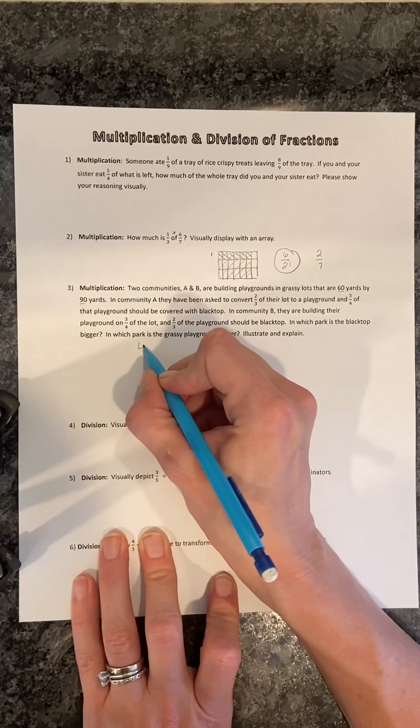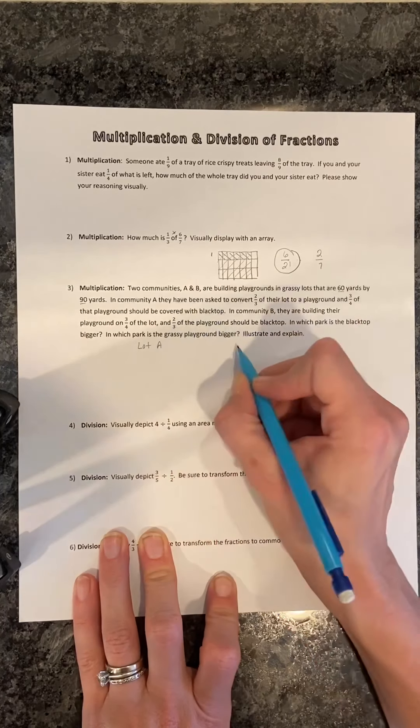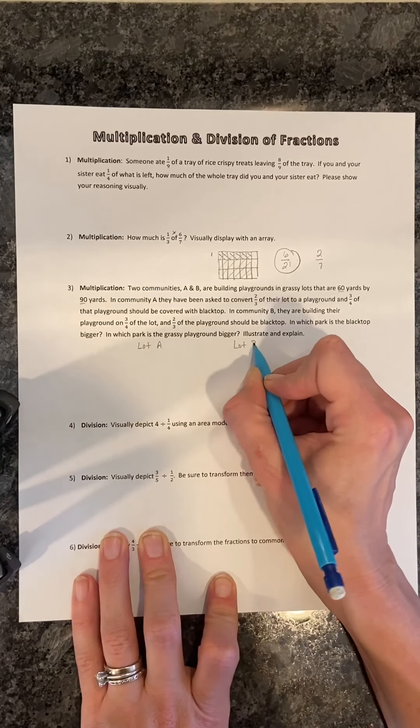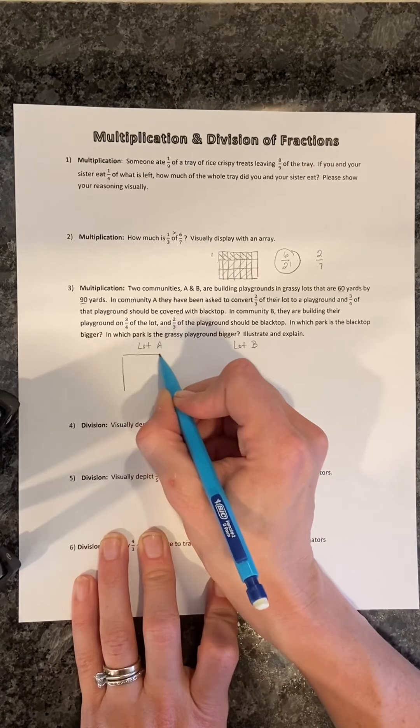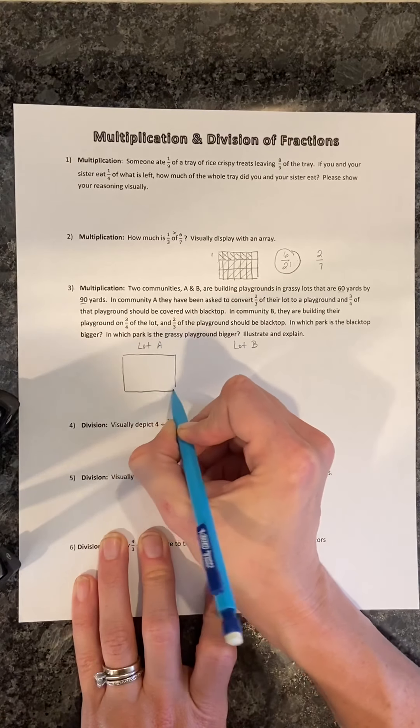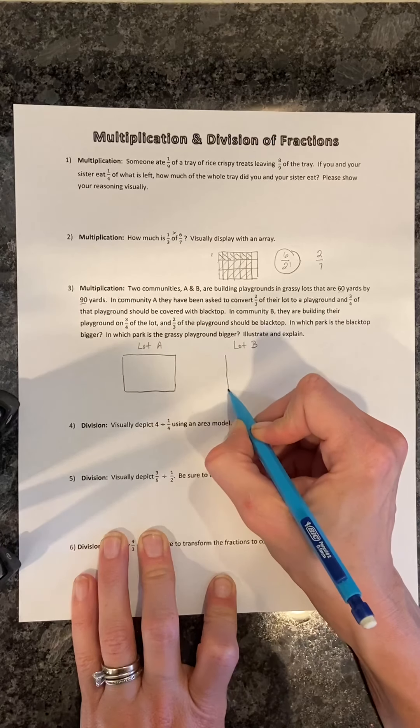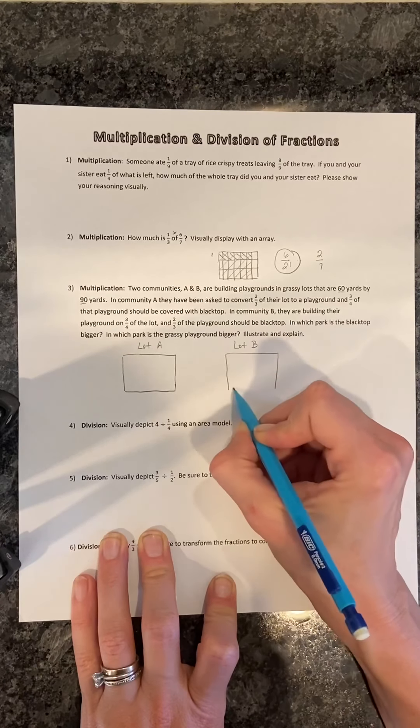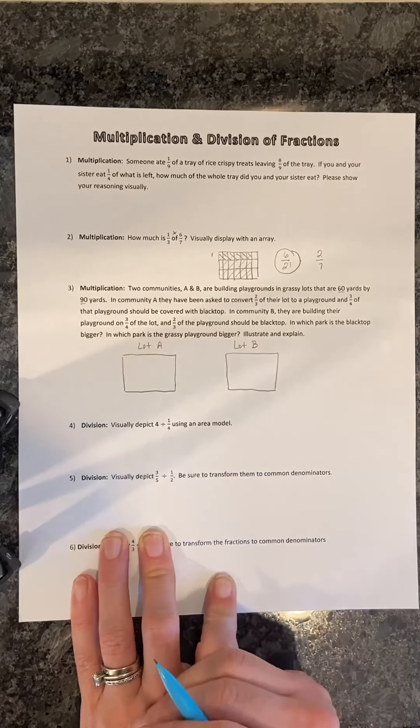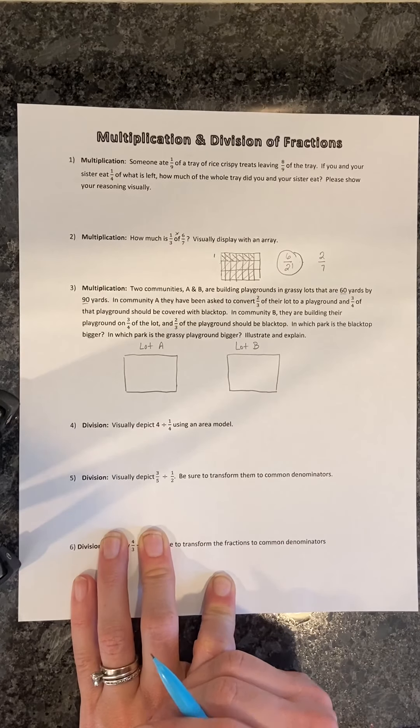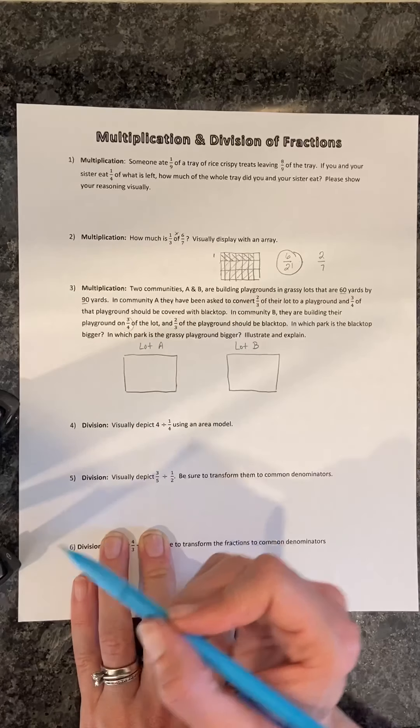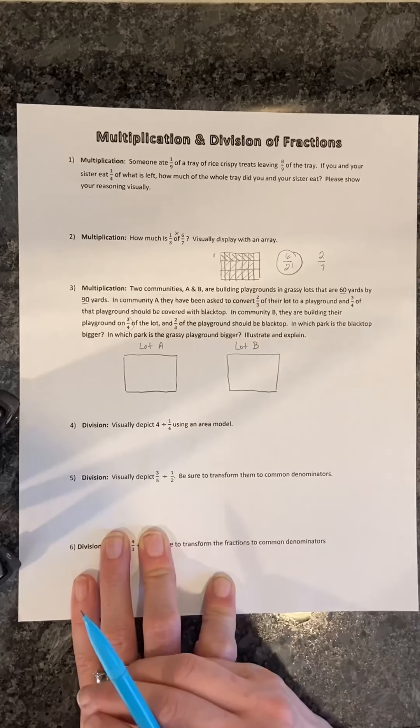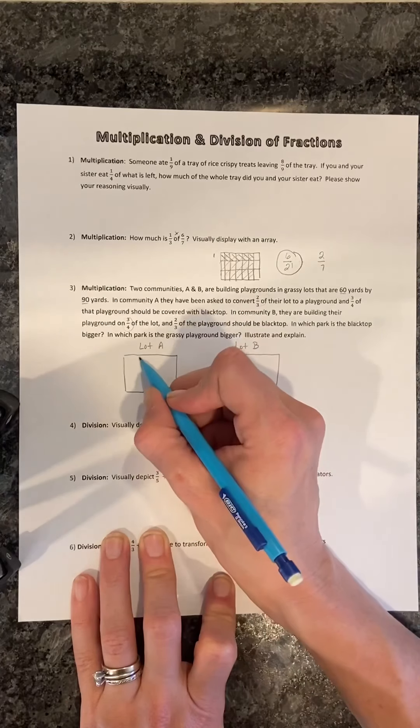So we have lot A and then lot B. The size is the same of each lot. So we'll go ahead and depict this with a similarly-sized rectangle. But we know that lot B has a bigger playground. How do we know that? Because three-fourths of their lot is playground, whereas two-thirds of lot A's is playground.